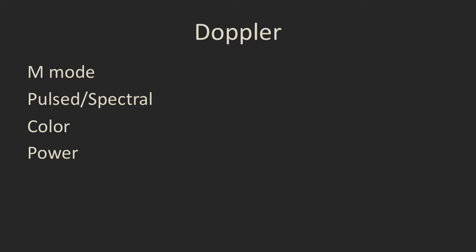Doppler ultrasound gives us the ability to detect, display and measure movement, usually flow. I'm not going to talk about the physics of it. There are four different types of Doppler ultrasound I'm going to talk about in sequence: M mode, pulsed or spectral Doppler, color Doppler, and then power Doppler.